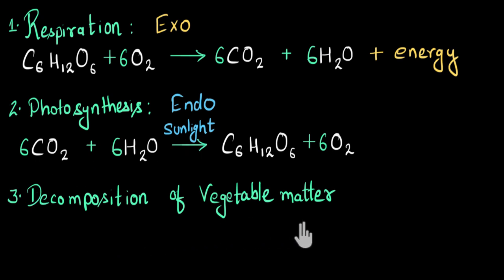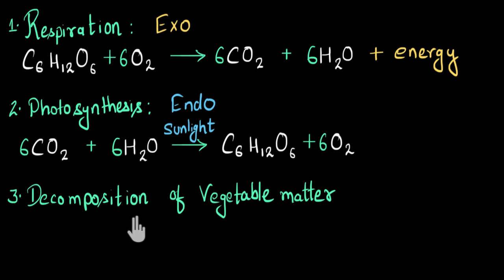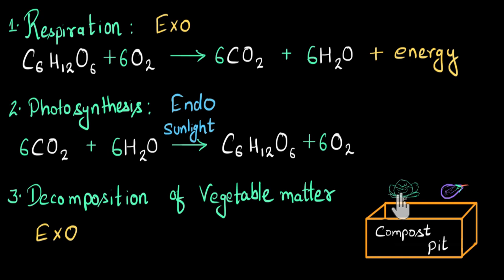Now let's talk about decomposition of vegetable matter — this is a tricky one. In general, decomposition reactions, where a big molecule breaks down into smaller molecules, generally require a lot of energy, meaning they are generally endothermic. But not this one — this one releases more heat and is exothermic in nature. When we throw off unused vegetables or fruits, bacteria and fungi act on it and decompose it, and in this process a lot of energy is released.